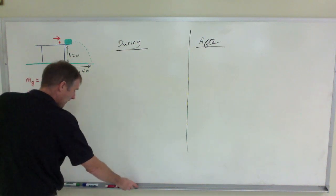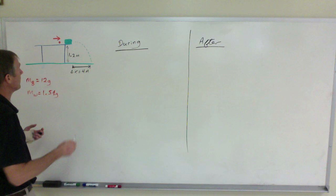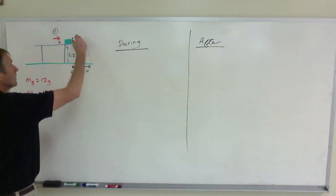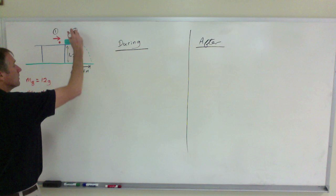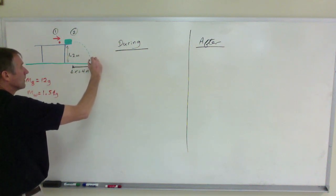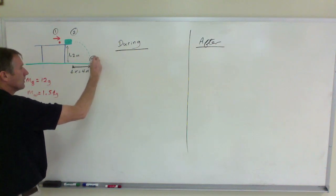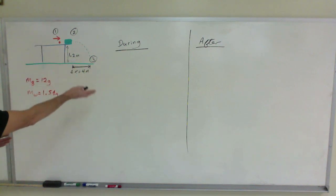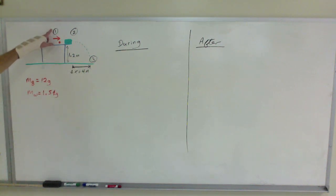I find it easiest to do these problems by labeling the beforehand part as point 1, the after part as point 2, and when it hits the ground as point 3, just so we have some reference points. I'm looking for the velocity of the bullet at point 1, before it hits the block.